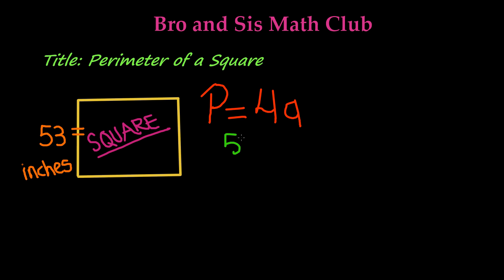So 53 times 4. 4 times 3 is 12, so write the 2 and carry the 1. 5 times 4 is 20, add the 1 and you get 21.